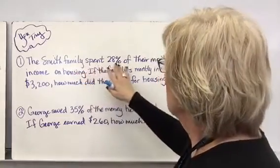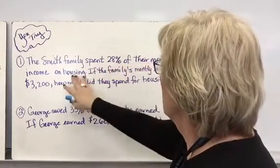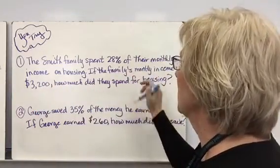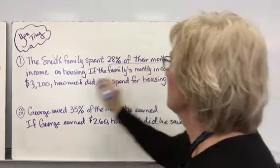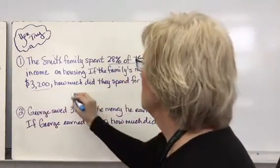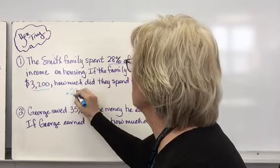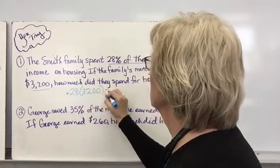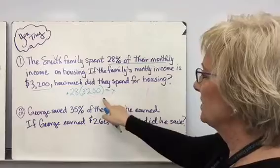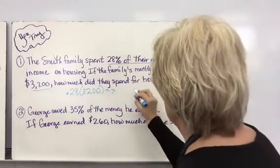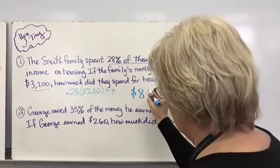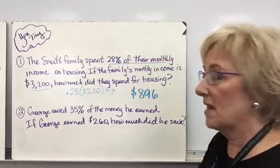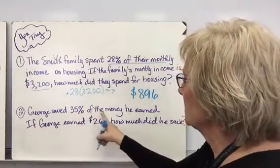The Smith family spent 28% of their monthly income on housing. If the family's monthly income is $3,200, how much do they spend on housing? I'm looking at 28% of their monthly income of $3,200. I can change this into a decimal: 0.28 times 3,200 should give me how much they spend on housing. Putting this in my calculator, they are spending $896 on housing.